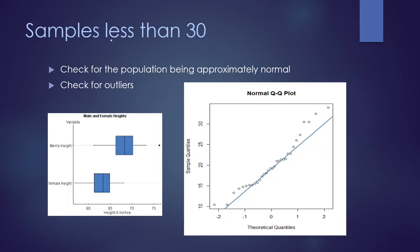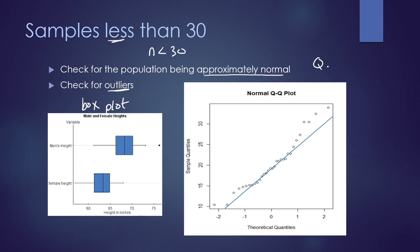If the sample size is less than 30, then we have to check some conditions. We have to make sure there are no outliers using a box plot, and we have to ensure that the population is approximately normal by looking at the QQ plot and confirming that it follows an approximately linear pattern, which tells us it's approximately normal.